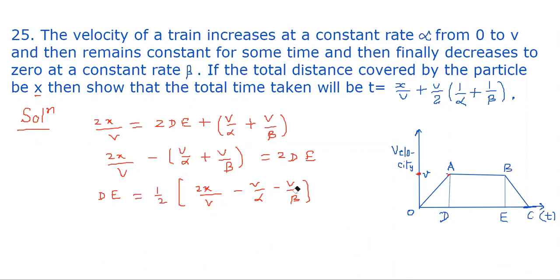Now, the total time is OD + DE + EC. So total time T = OD + DE + EC. We put the values. OD, we have already found, is v/alpha.